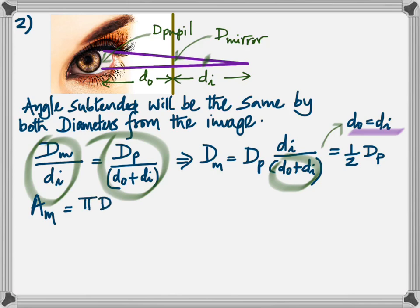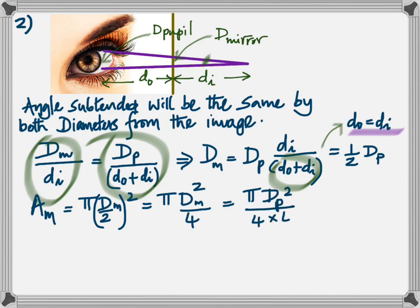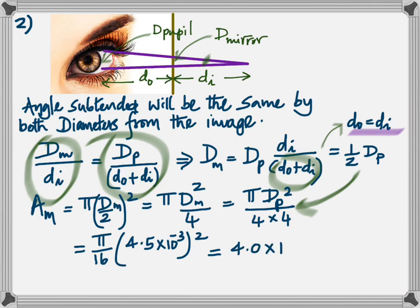Now the area of a circle is pi R squared. That is the area of the mirror part, where it cuts the mirror, and that can of course be substituted as dP squared by 4, because we've shown that dM is 1 half dP. That's a direct substitution of this here. And when you put in the numbers, you get it as 4 times 10 to the negative 6 meter squared.